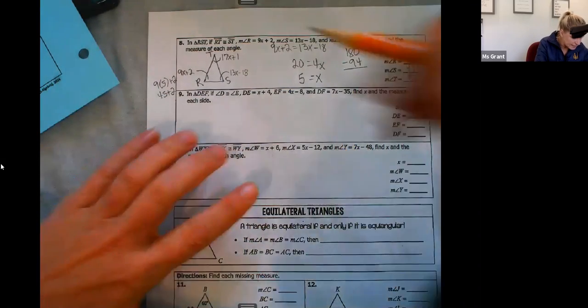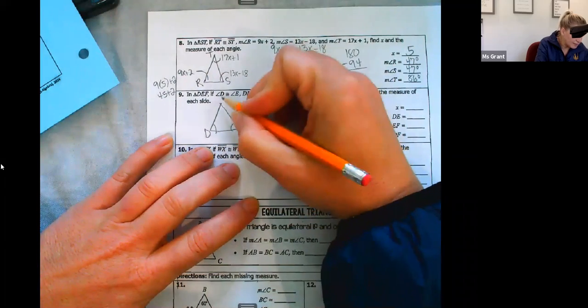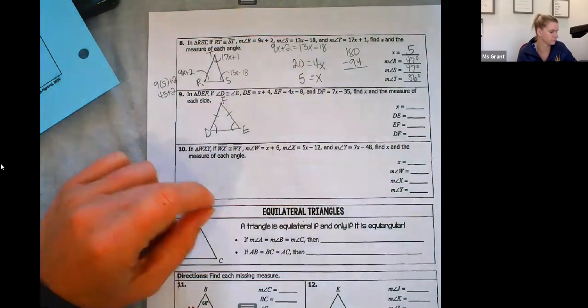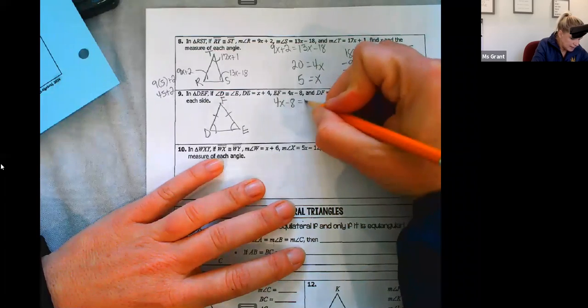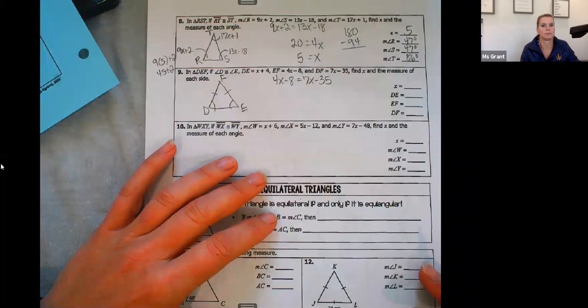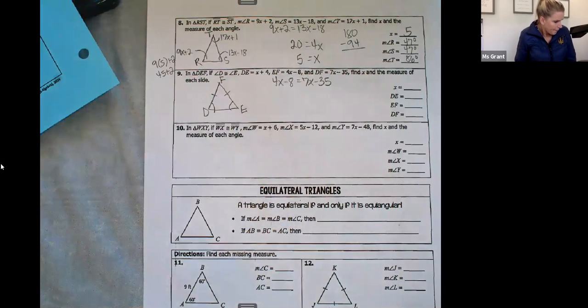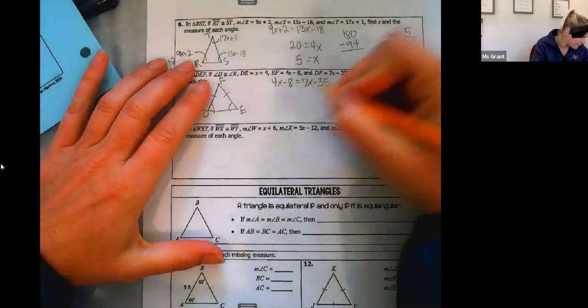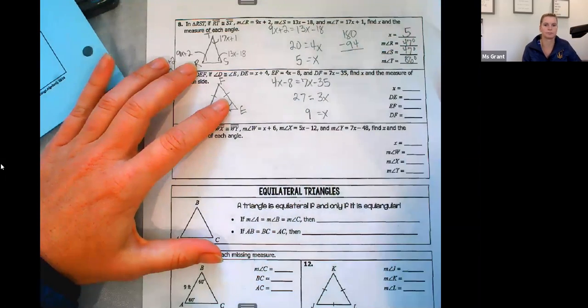Triangle DEF. D and E are congruent. That means that D and E are the base angles. That means that F is on top. These sides are the congruent sides. 4X minus 8 is equal to 7X minus 35. Get the X's together. Get the 35 and the 8 together. 27 equals 3X. X equals 9.